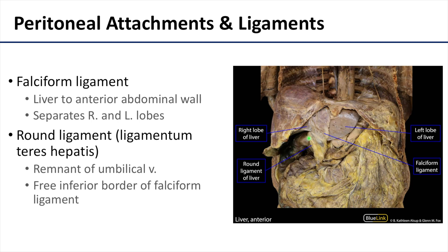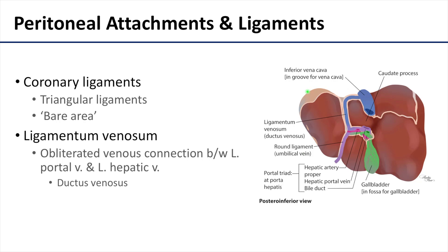The round ligament is the remnant of the umbilical vein that in fetal life opened into the portal vein. The diaphragmatic surface of the liver is covered with visceral peritoneum except posteriorly in what we call the bare area of the liver, where the liver is attached to the diaphragm by areolar tissue rather than peritoneum. The visceral peritoneum covering the majority of the liver forms the coronary and triangular ligaments. Also noteworthy is the ligamentum venosum — the obliterated venous connection between the left portal vein and the left hepatic vein, known fetally as the ductus venosus — sitting in its groove between the caudate and left lobes.